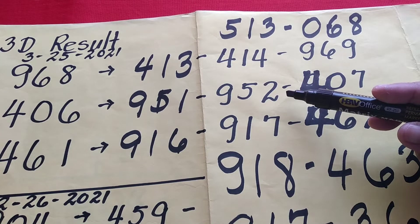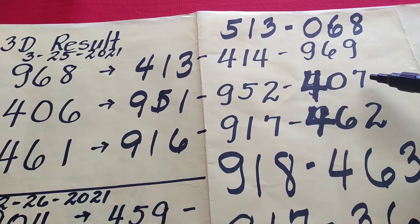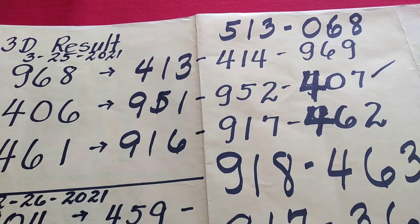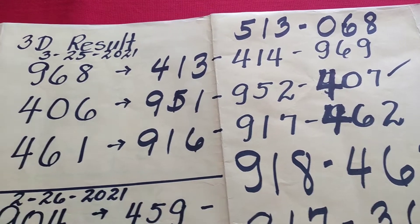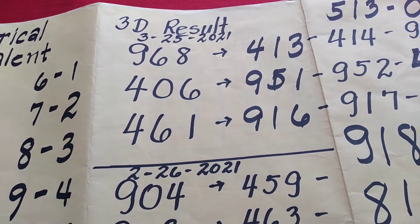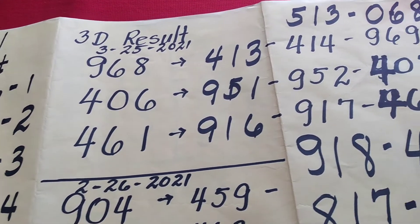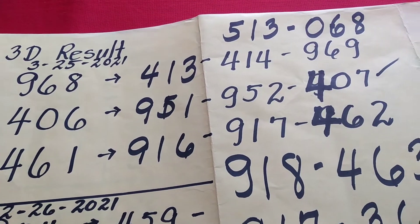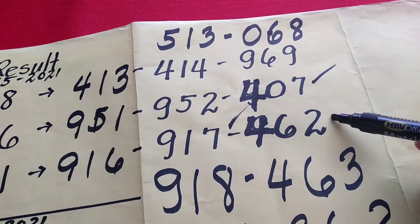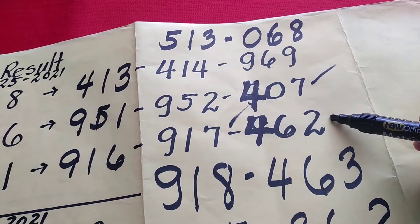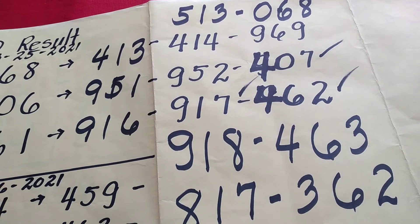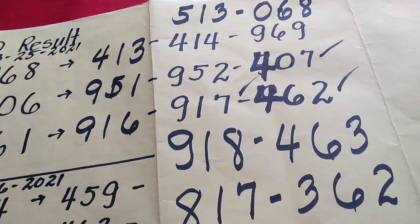Pero yung numerical equivalent ng 4, 0, 7 hindi pa. Yung 9, 1, 6 ito ay lumabas na. Pero yung 9, 1, 7 hindi pa. Yung 4, 6, 2 lumabas na. Pero yung 9, 1, 7 hindi pa. Tapos yung 9, 1, 8 nung isang araw, the other day: 9, 0, 8.